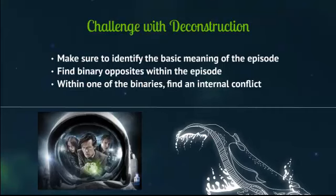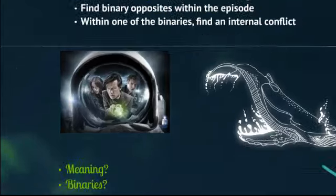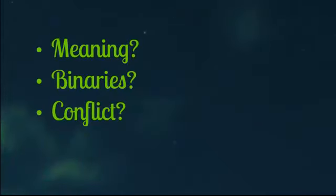Then you choose one of the binaries that you have come up with. So if I had decided young/old, black/white, tall/short — I may then decide with tall/short to go through and look at it a little bit more closely to find some internal conflict within that specific binary. So for this one, I'm going to walk you through 'The Impossible Astronaut,' which is one of the questions you did for the test. I wrote this out on a lot of people's papers, but I wanted to walk you through it so you understand why I'm getting here with the meaning, the binary, the conflict.